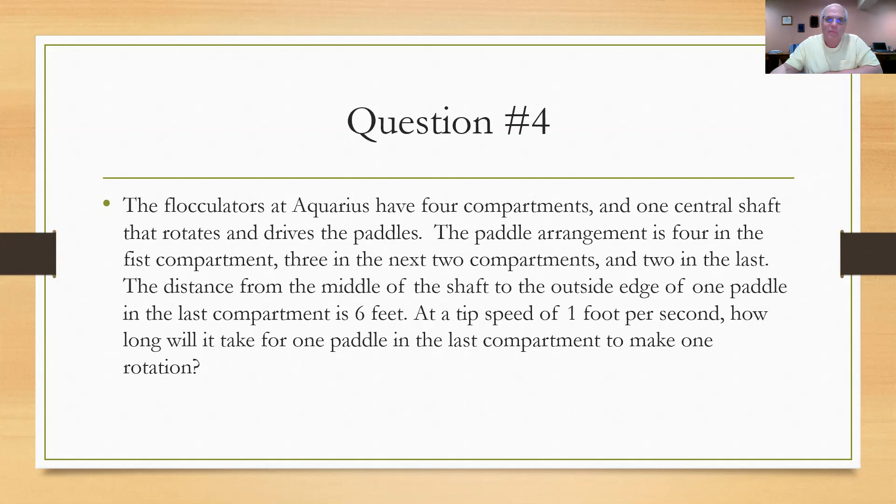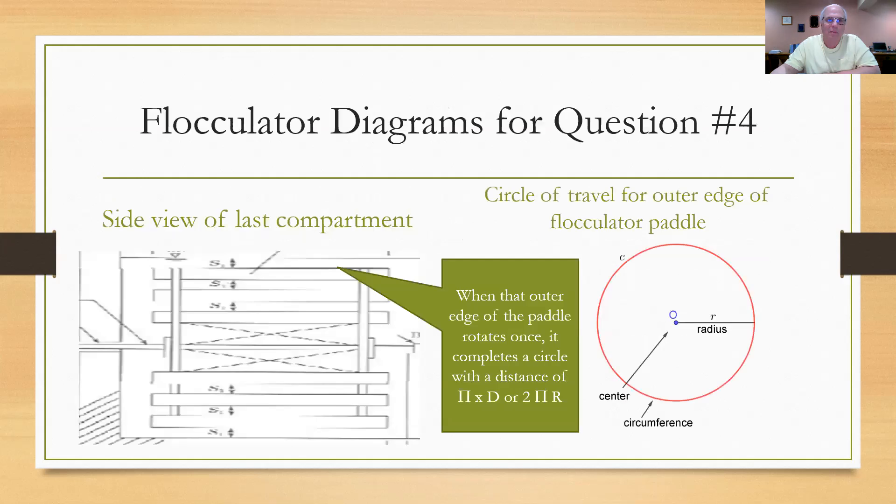They're saying when the paddle goes around one time, it cuts out a circle that's roughly 12 feet in diameter or six feet radius. And the question is then, at a tip speed of one foot per second, how long will it take for one paddle in the last compartment to make one rotation? Let's look at that. Let's look at some pictures so we know we understand what we're talking about.